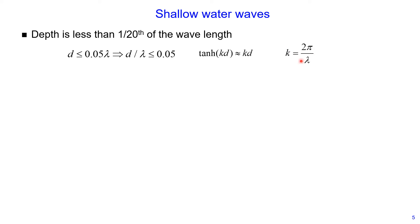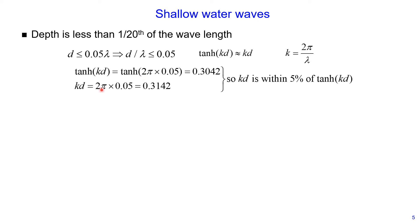The wave number equals 2π divided by wavelength. Let's verify: the hyperbolic tangent of k times d equals the hyperbolic tangent of 2π divided by λ, multiplied by d. This is our ratio d divided by λ, which equals 0.05 for shallow water. The hyperbolic tangent equals 0.3042, and the product of wave number multiplied by water depth equals 0.3142, which is approximately within 5% of the hyperbolic tangent value.